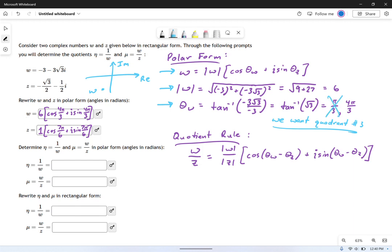Well, pi over three is not in quadrant three. Four pi over three is in quadrant three. So that's the angle we're going to use. And that's why you can see I have four pi over three in my answer right here.